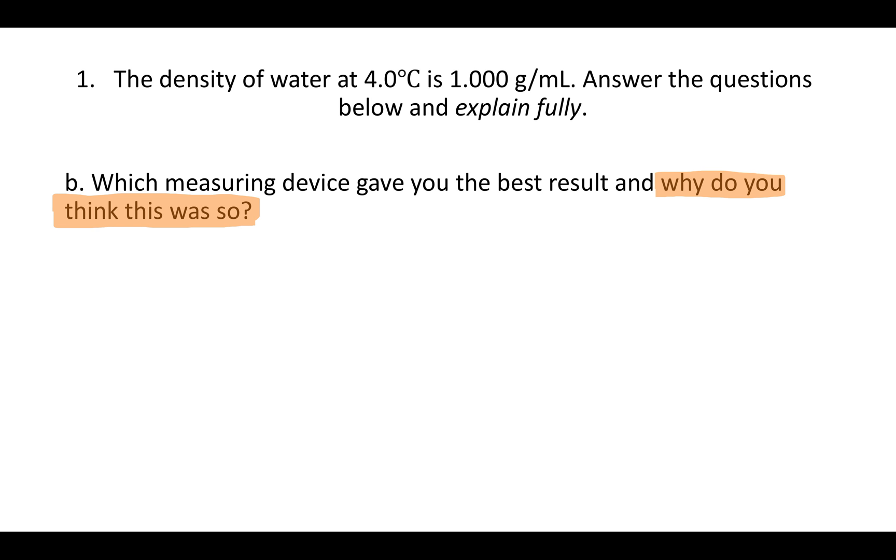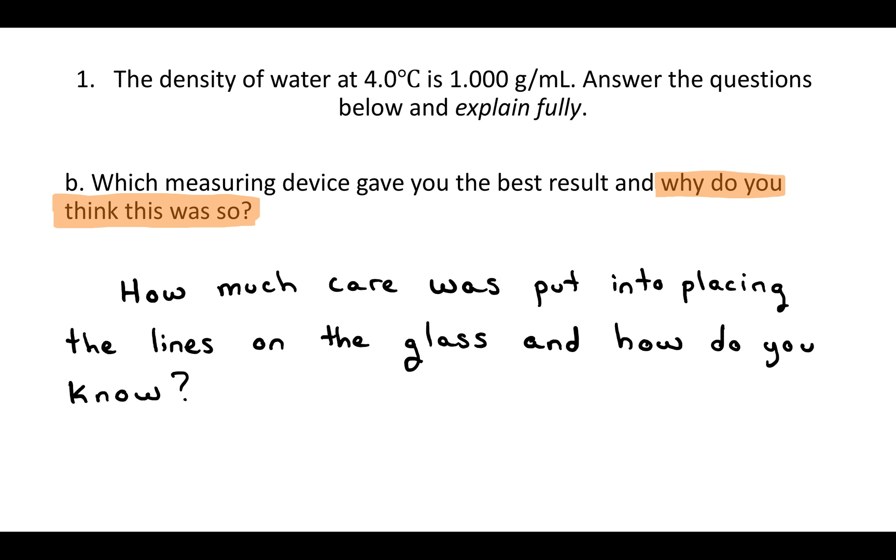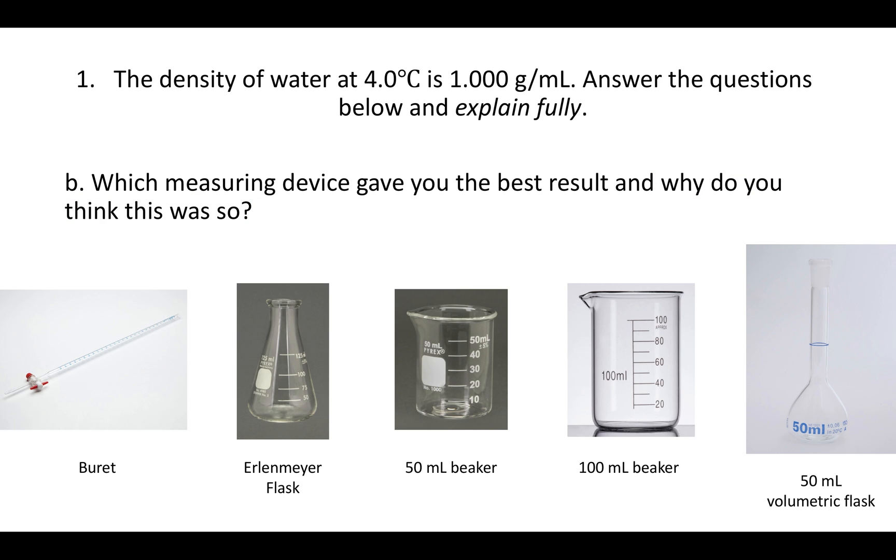And then why do you think this was so? You're really just asking how much care was put into placing the lines on the glass, and how do you know? If you remember, these are your pieces of glassware. Say, for example, the 50 milliliter volumetric flask on the right. There's only one line on that. What does that imply?